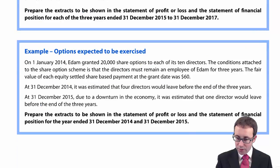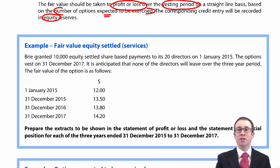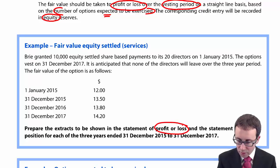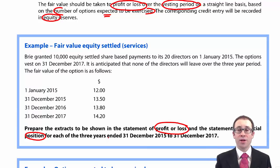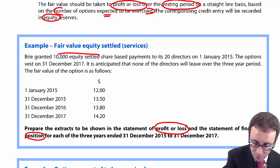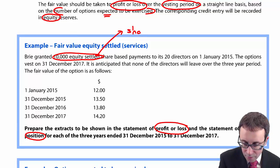The example is nice and straightforward, nothing too complicated. It's looking at a fair value equity-settled share-based payment scheme for services — we'll deal with goods afterwards. It doesn't take account of any changes within the expected number of employees, so we're keeping it very simple. It wants us to look at extracts from the statement of profit or loss and the statement of financial position for each of the three years ended December 2015 to December 2017.